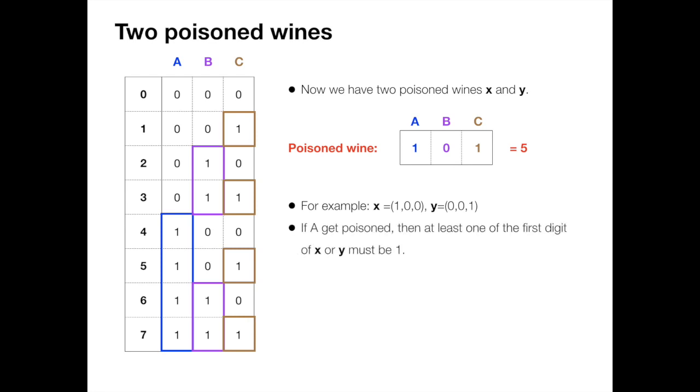So are we done? Not really, because we still get some information. If A gets poisoned, this means that at least one of the digits of x₁ and y₁ must be 1. So what we get is not directly the full representation of x₁ and y₁. What we get is the maximum between x and y in each column.